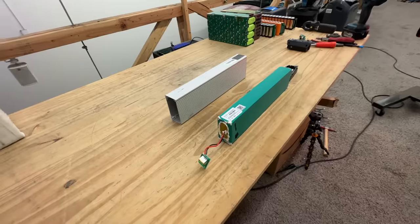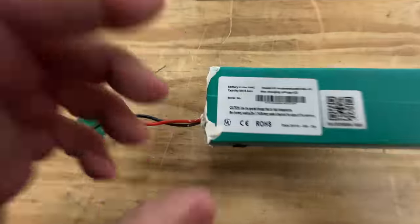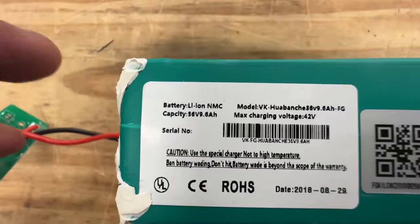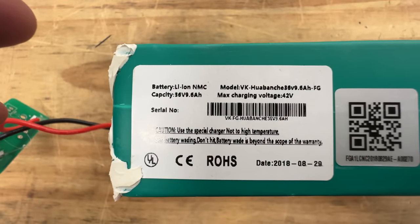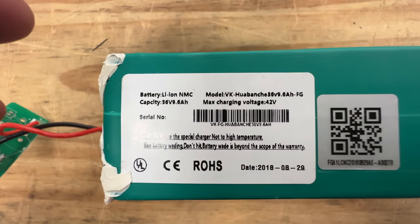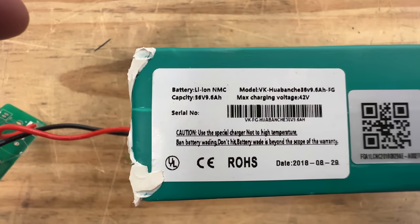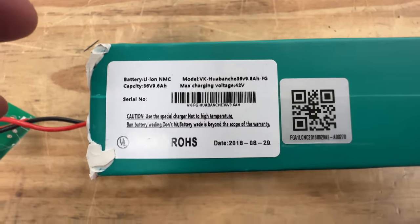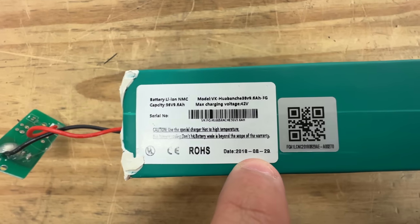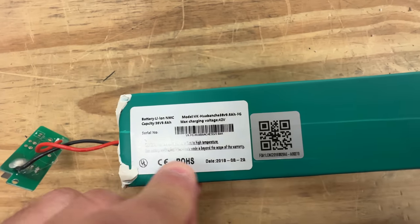Alright, so here it is. Now we get to see - well, another label here. There's not much here other than capacity is 36 volts. So now we know: 36 volts, 9.6 amp hour. Gives us another thing there, but nothing very useful here. Oh, date 2018. We're in 2022, so these are about four year old batteries.